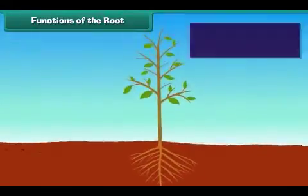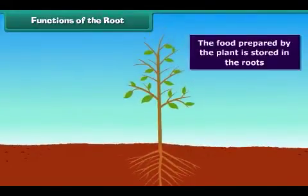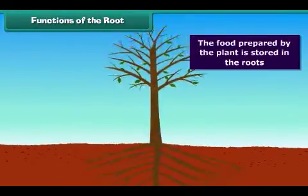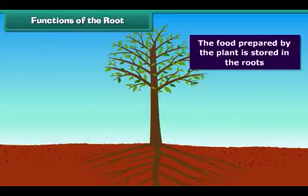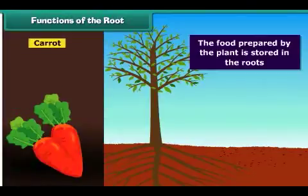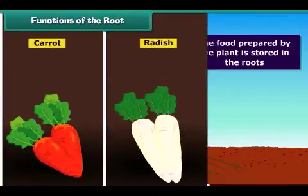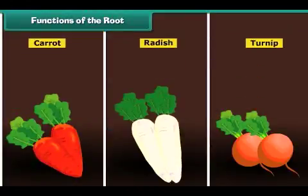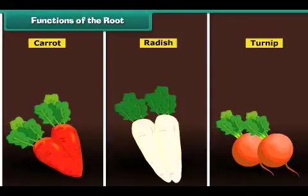Roots also perform the function of storage of food in some plants, such as carrot, radish and turnip. The food prepared by the plant is stored in the roots. We eat these roots and get nutrition.